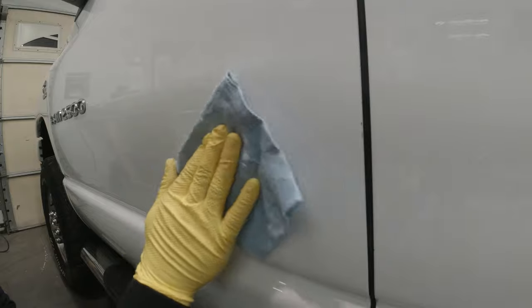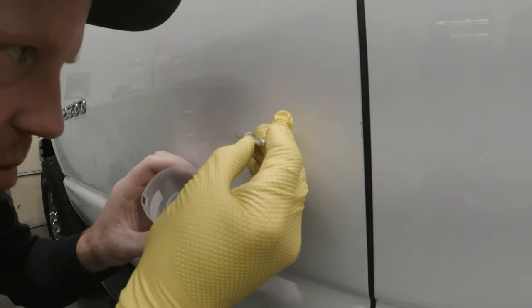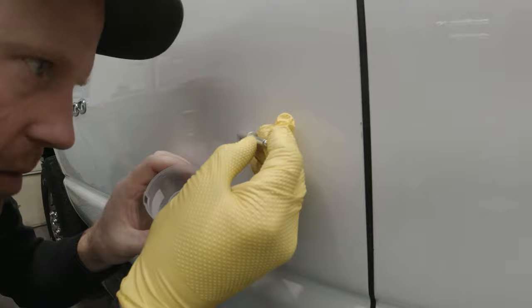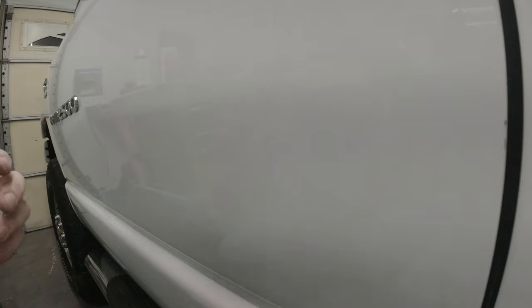Now that we let the paint dry for about two hours we're gonna wet sand whatever paint we got outside of the chip there. We'll wax and grease remove one more time and just put a little bit of clear coat over the top of it. After 15 minutes we'll throw on one more coat.